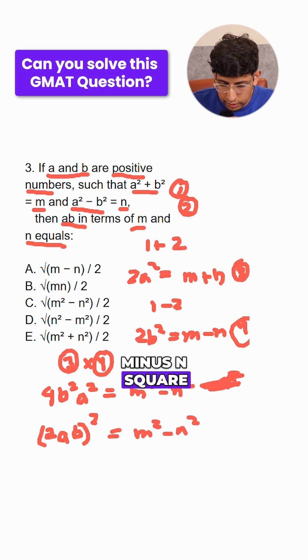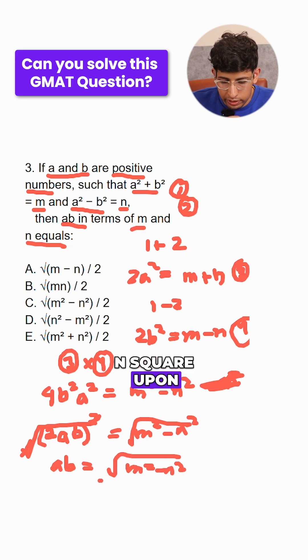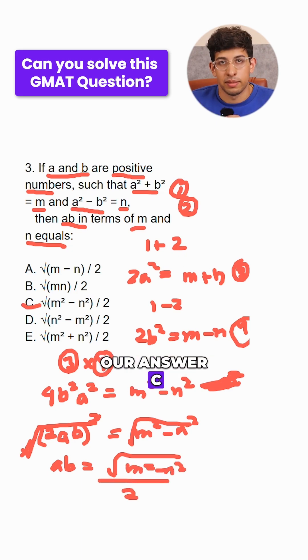Taking the square root cancels the square, so 2ab = √(m² - n²), which means ab = √(m² - n²)/2. This is answer C.